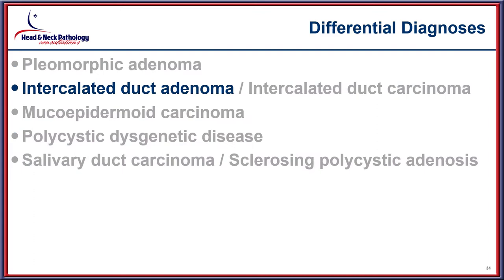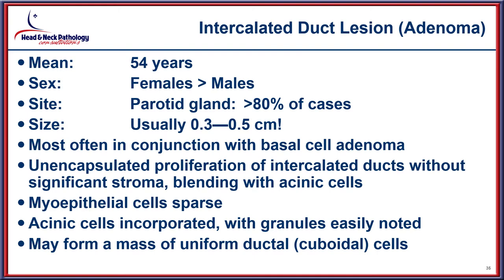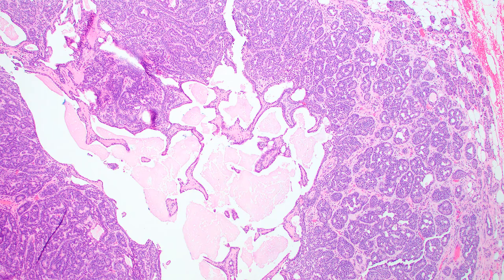Intercalated duct adenoma is a benign consideration. When truly encapsulated it may be called an adenoma, but these lesions are quite small — fractions of a centimeter — so intercalated duct lesion may be a better name. It tends to have a very limited myoepithelial component and is an unencapsulated proliferation with acinic cells incorporating granules, forming a mass of very uniform-appearing ductal or cuboidal cells.